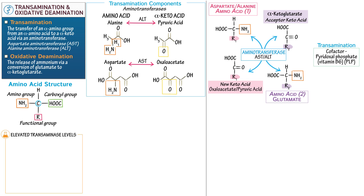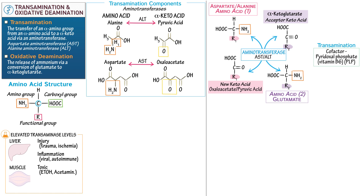Clinically, transaminase levels are incredibly important in the panel of liver enzymes. The transaminases exist within both mitochondria and cellular cytoplasm, the cytosol. Common pathologic causes of elevated transaminases include injury to liver or muscle from trauma or ischemia — lack of blood flow — inflammation such as viral hepatitis or liver infection, myositis — muscle infection or inflammation — or an autoimmune attack of liver or muscle, and toxic causes.